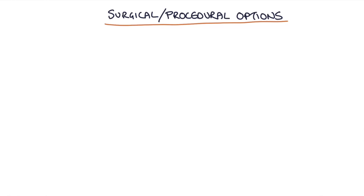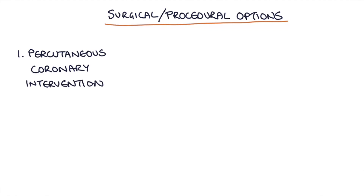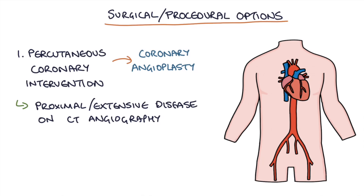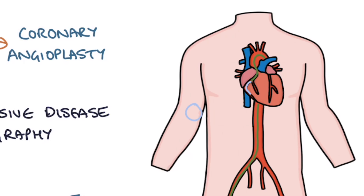There are also surgical and procedural options. The main procedural option is percutaneous coronary intervention (PCI) with coronary angioplasty, offered to patients with proximal or extensive disease on CT angiography. This involves putting a catheter into the patient's brachial or femoral artery and feeding it up into the coronary arteries under x-ray guidance, then injecting contrast to identify the area of stenosis.